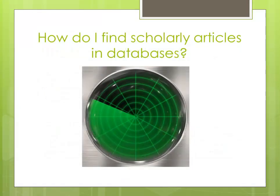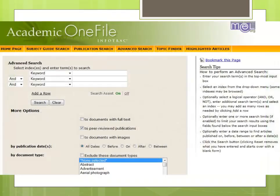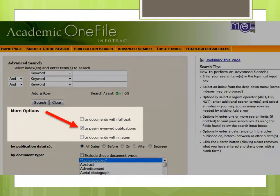So how do you find scholarly articles within the library's databases? It's important to keep in mind that although journal article databases may look different, the methods to limit your results to scholarly journals are the same. In this general topic database, you will see a limiting option that will allow you to search only within peer-reviewed publications. This option is available in the majority of article databases the library has to offer.